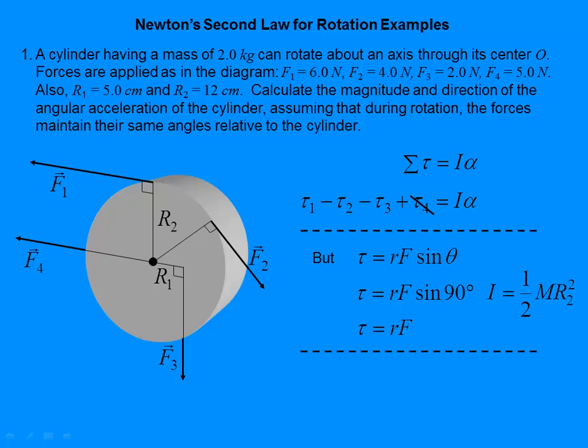If this is a disc, the rotational inertia is one-half MR squared. We need to use R2, which is the entire radius of the disc, so it's R2 squared. Torque one is R2·F1, torque two is R2·F2, torque three is R1·F3, and I is one-half MR2 squared.